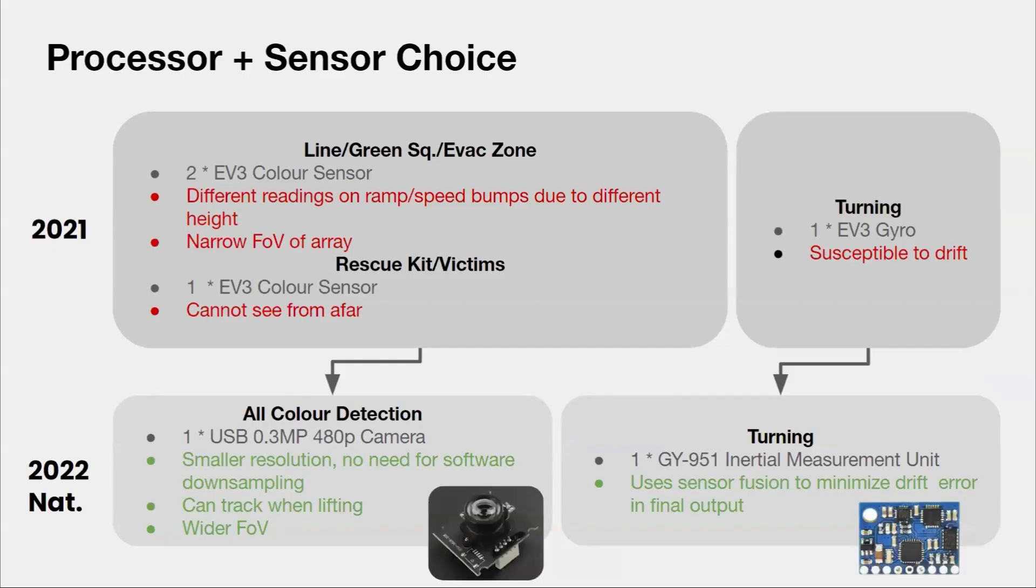For hardware design, in 2021 there were many compromises because only two EV3 sensors were used for line tracking and green squares. The readings would change if the robot was lifted due to the ramp or speed bumps, making it hard to tune. The narrow field of view meant if the robot deviated too much from the line, it would not be able to refind it. One more sensor was put at the front to detect victims or the rescue kit, but this sensor cannot see very far, meaning you would have to blindly sweep through the evacuation zone, which wastes time and adds complexity.